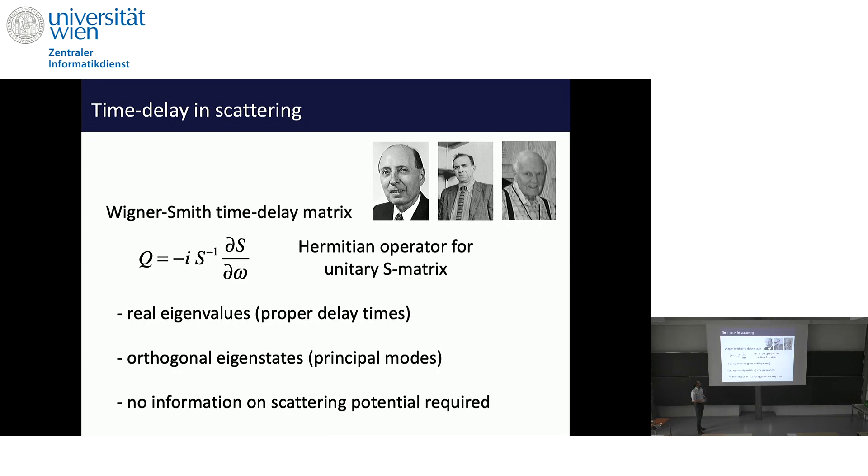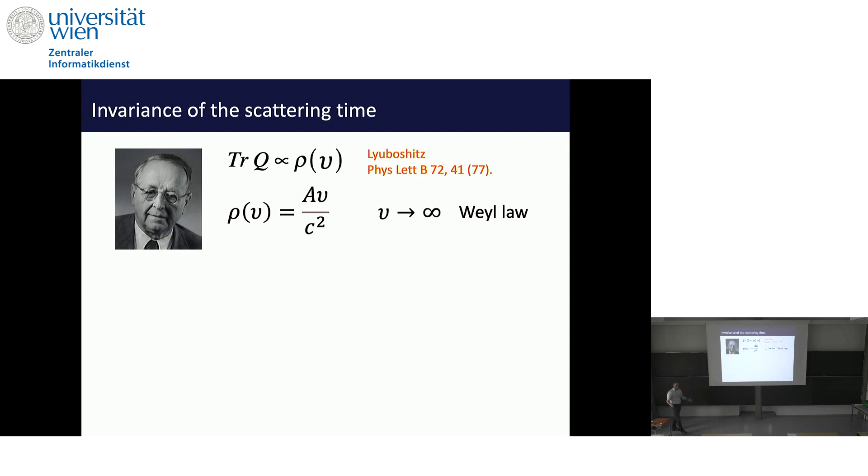It gives you access to time without having to know anything about what's inside the system. You just need the far-field information in the scattering matrix. Let's try to use this operator now to estimate the time. If I have isotropic illumination, it means light comes in from all possible modes. This is equivalent to taking the trace of this time delay operator. It has been shown by a Soviet scientist many years ago that the trace of the time delay operator is exactly proportional to the density of states in a medium.